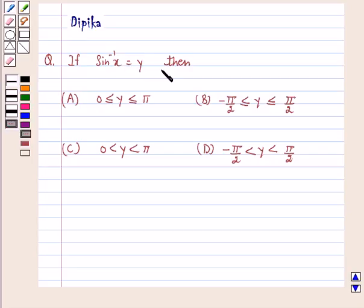If sine inverse x equals y, then (A) 0 is less than or equal to y, y is less than or equal to π. (B) minus π/2 is less than or equal to y, y is less than or equal to π/2.